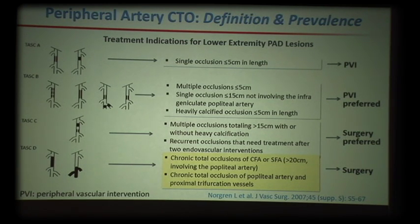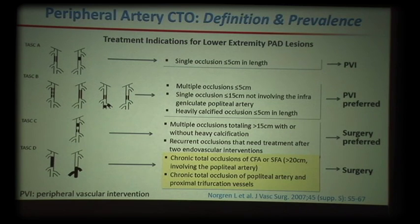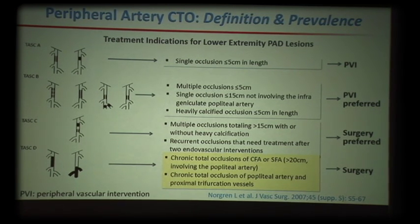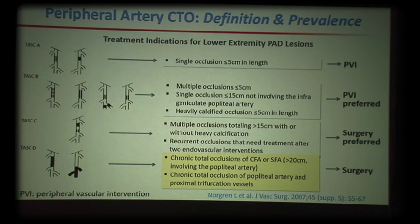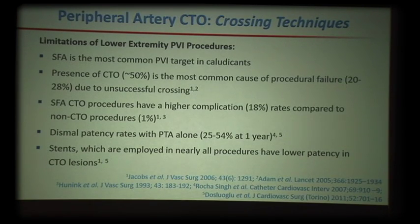There are a host of different classifications, but the most frequently used is the TASC classification that classifies lesions from A to D in terms of increasing severity. PVI — peripheral vascular interventions — is probably more preferred for simpler lesions. However, speakers on this podium are pushing the envelope to do more complex lesions increasingly with peripheral vascular interventions.